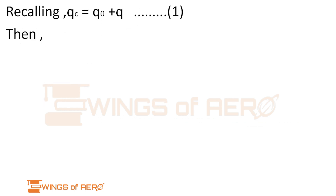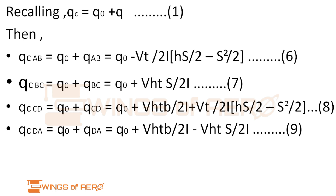Now recalling equation 1, q_closed = q0 + q_open, we can write the closed-section shear flow for each member: q_closed(AB), q_closed(BC), q_closed(CD), and q_closed(DA) as equations 6, 7, 8, and 9 for members AB, BC, CD, and DA respectively.